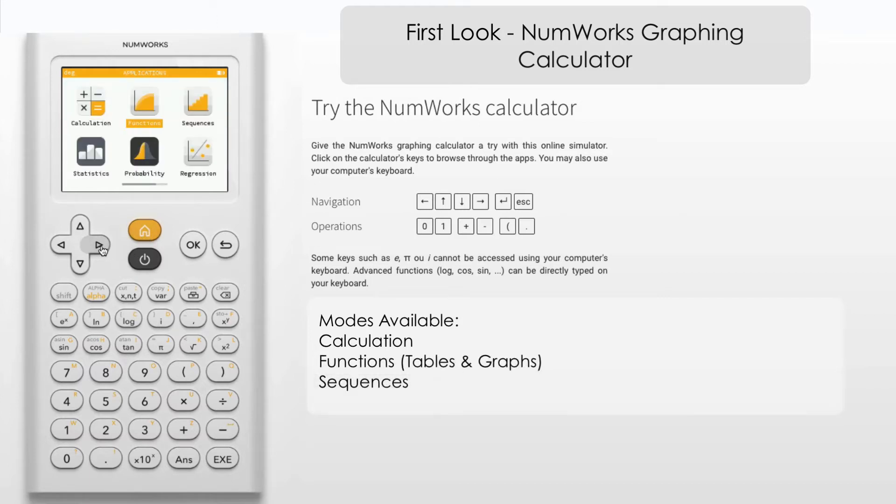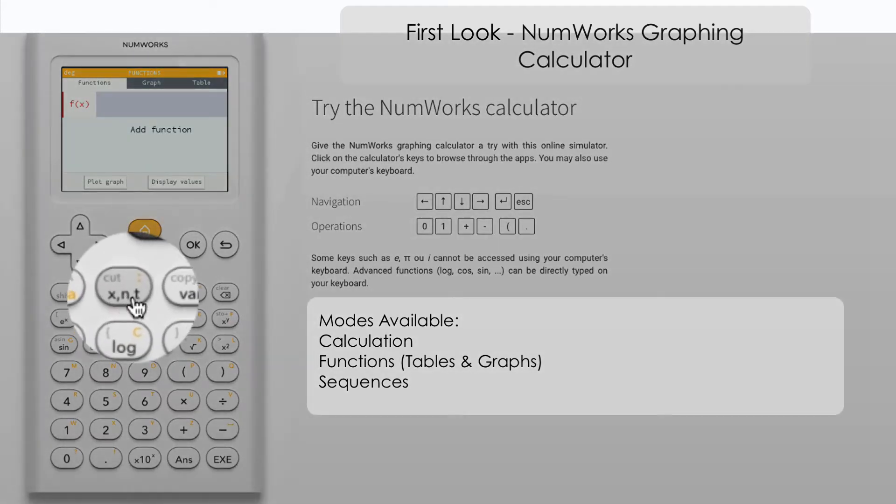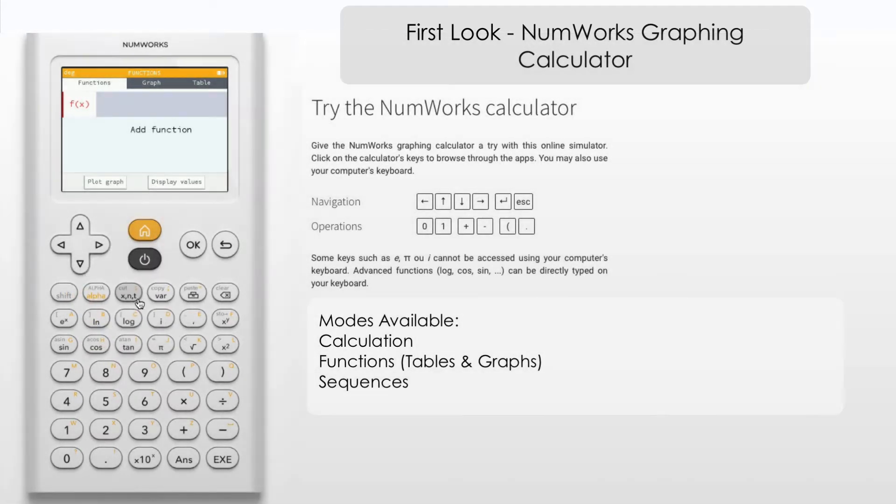Let's look what else we've got. We've got a functions menu. Now this operates a little bit similar to table mode on the Casio calculators but also combines a graphical function as well. So let's put in a function of x. We can see that there's a multiple letter input function here, x or n or t.